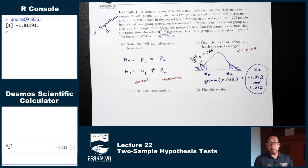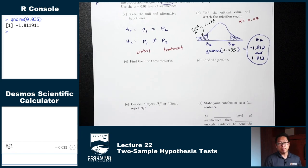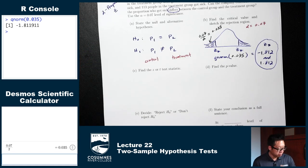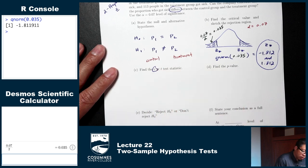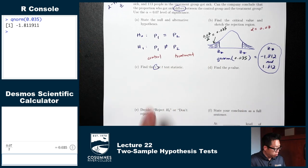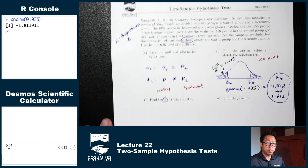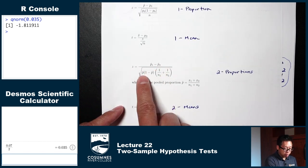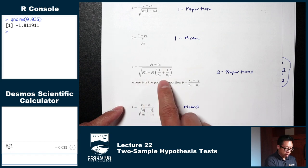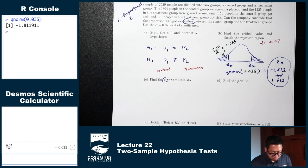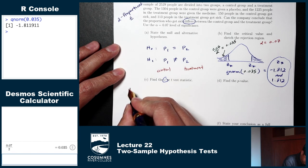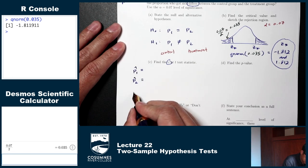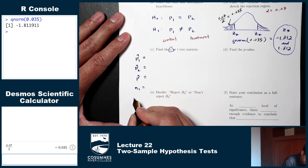Part C: Find the Z test statistic. We're dealing with two proportions, so we use the Z formula with P1-hat, P2-hat, P-hat (pooled), N1, and N2. P1-hat is the proportion from the control sample: 150 sick out of 1,304 total, which is 150/1304 ≈ 0.115. P2-hat is the proportion from the treatment sample: 113 sick out of 1,225 total, which is 113/1225 ≈ 0.092.